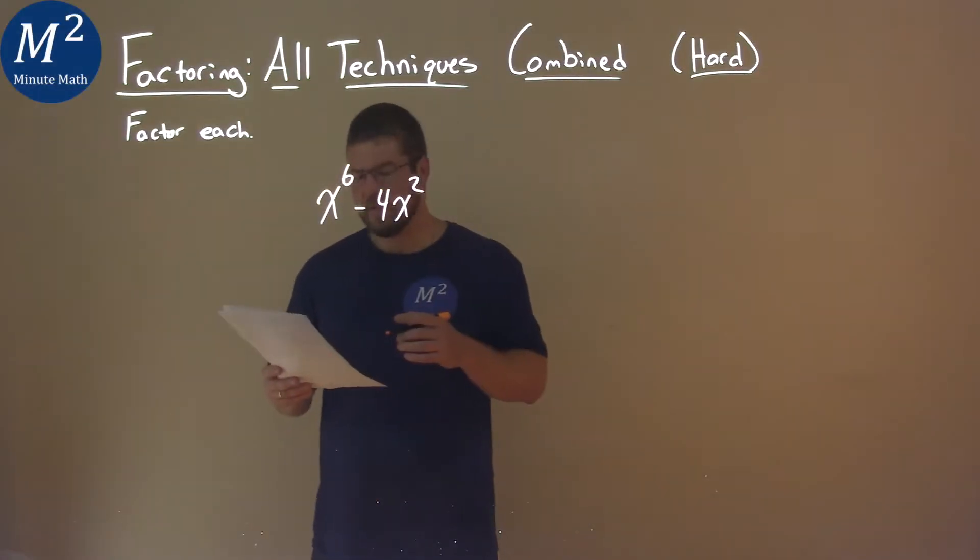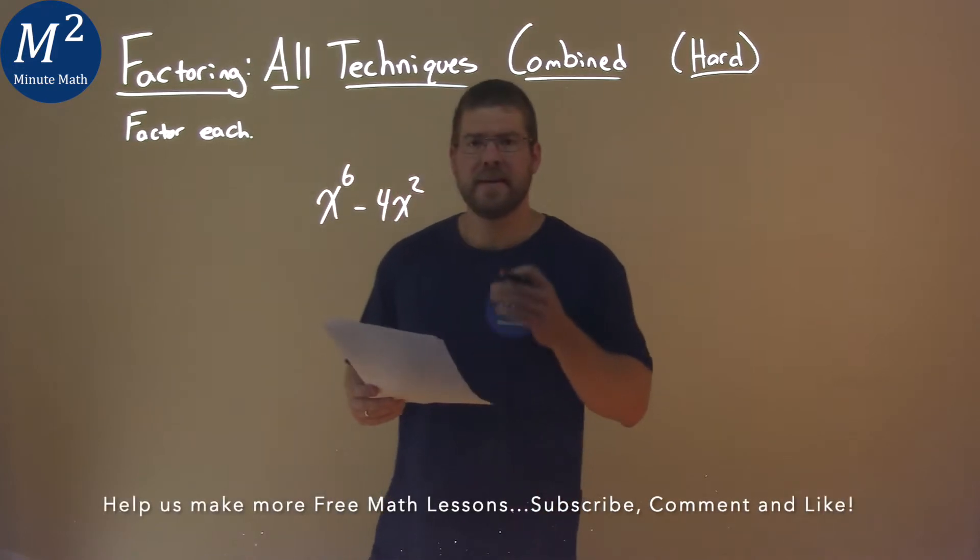We're getting this problem right here, x to the sixth minus 4x squared, and we've got to factor this.